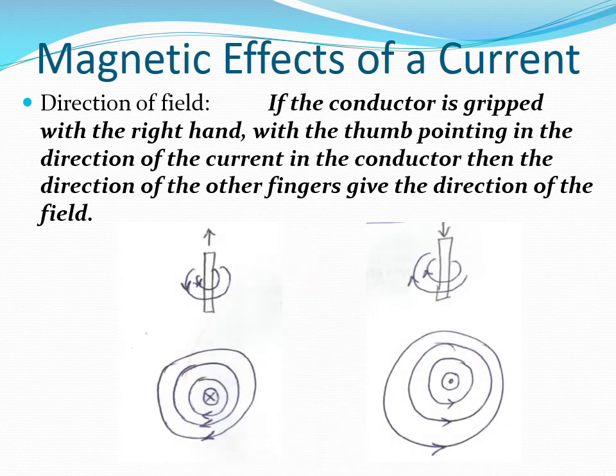These diagrams illustrate further the direction of the magnetic field established around a current-carrying conductor: the case when the conductor is vertical and the current is moving up, the case when the current is moving down, the case when the conductor current is moving into the plane of the screen, and the case when the current is moving out of the plane of the screen.